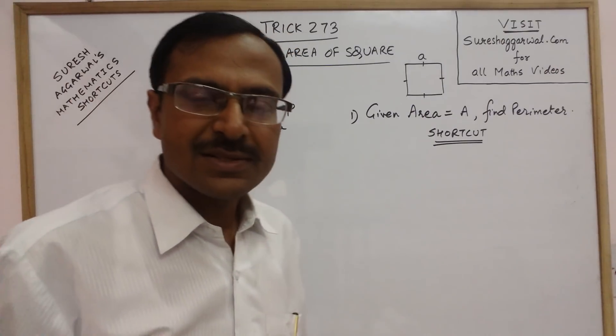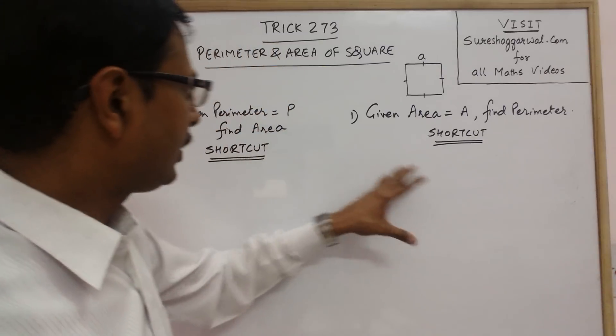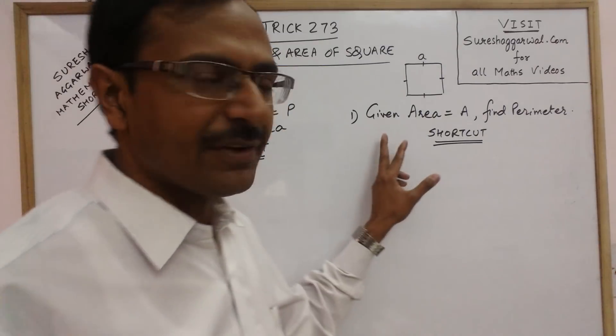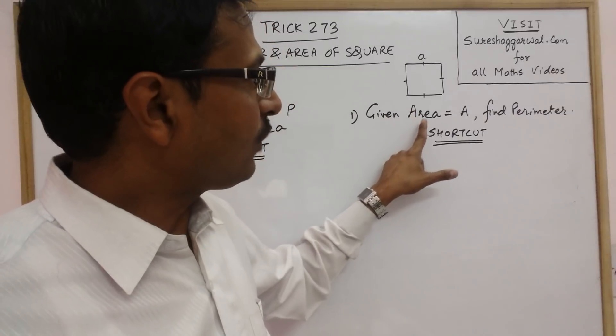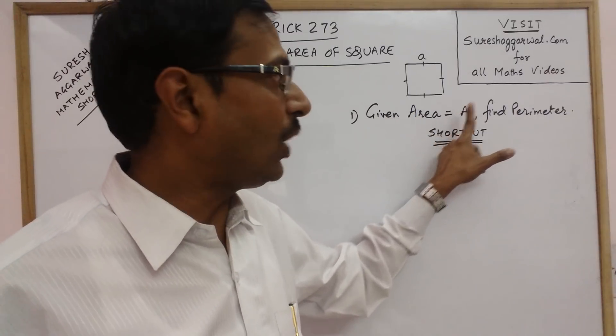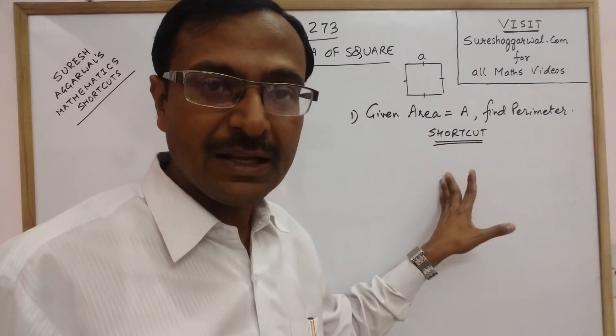We will be doing this problem in two parts. In the first part, if the area of a square is known, then how do we find the perimeter directly without actually using the formula for area and perimeter?